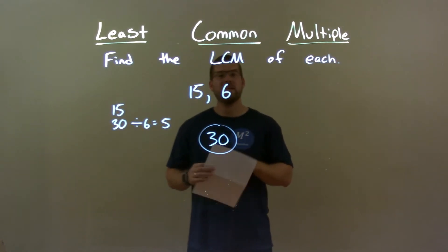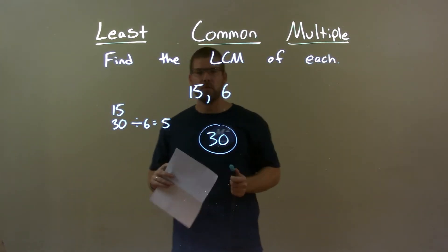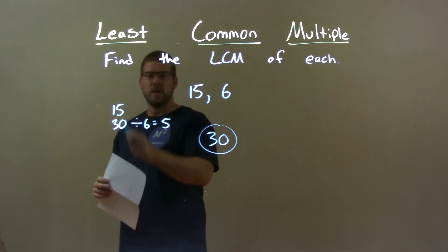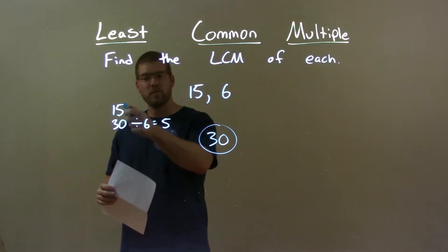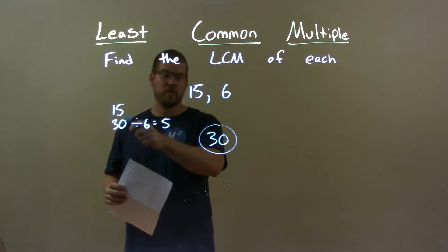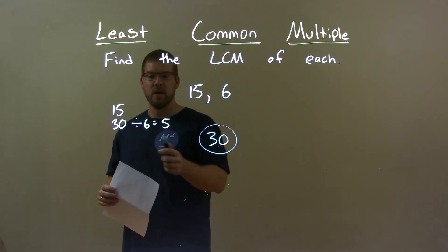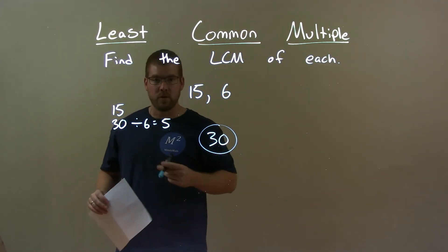So quick recap, we're given 15 and 6, and we find the least common multiple of them. Well, I take the larger number and find the multiples, and the smallest one of the multiples that's divisible by the other number, 6, was 30. So our final answer here is 30.